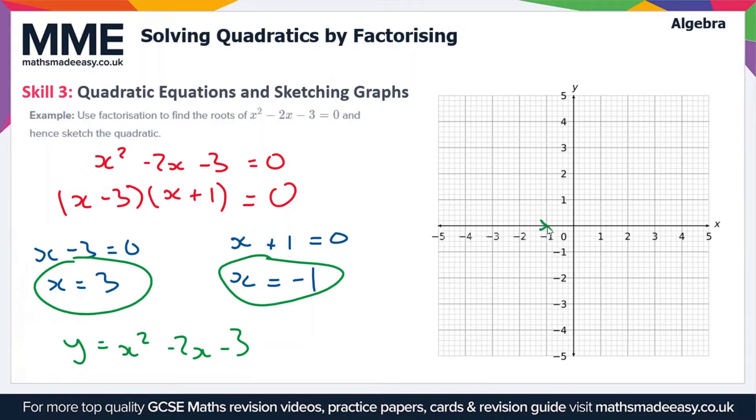x equals minus 1, that's here. And x equals 3, that's here. So these are the two roots of the equation. This is where it crosses the x-axis.